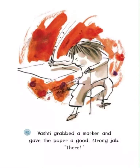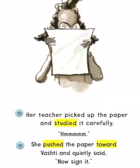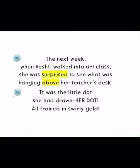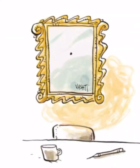Vashet grabbed the marker and gave the paper a good strong jab. There! Her teacher picked up the paper and studied it carefully. 'Hmm.' She pushed the paper toward Vashet and quietly said, 'Now sign it.' Vashet thought, well, maybe I can't draw, but I can sign my name. The next week when Vashet walked into art class, she was surprised to see what was hanging above her teacher's desk. It was the little dot she had drawn. Her dot. All framed in swirly gold.